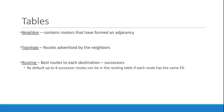EIGRP maintains three tables. The first is the neighbor table, which contains all the routers that it has formed an adjacency with — basically all its neighbors. If it's formed an adjacency with a router, it's its neighbor, and they will all be in the neighbor table.